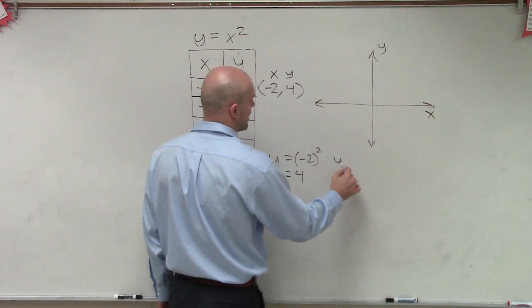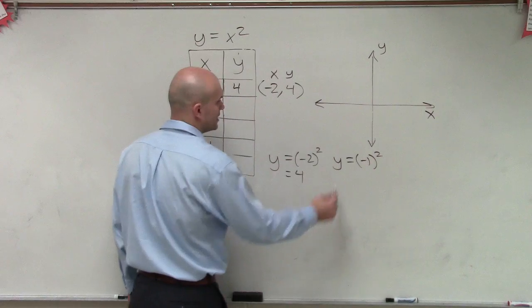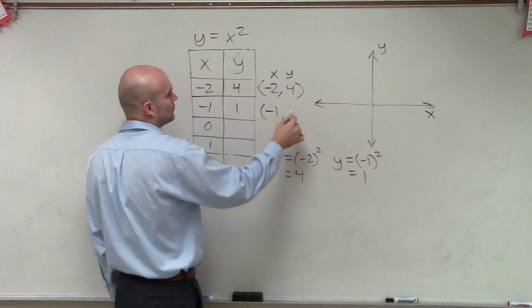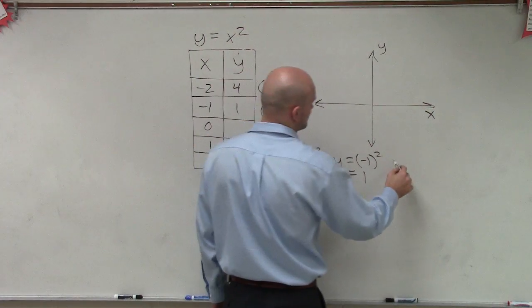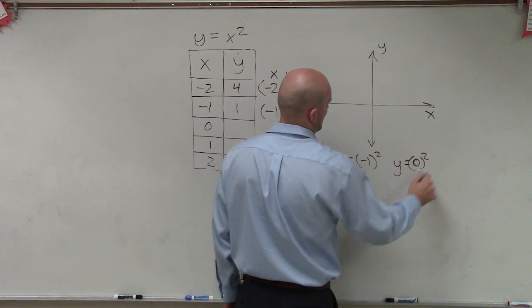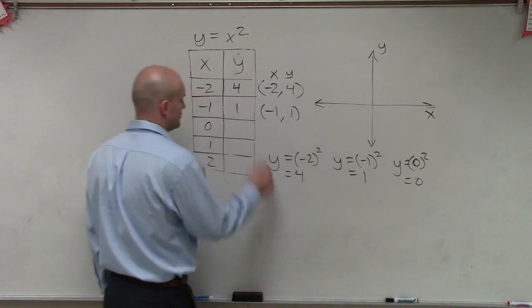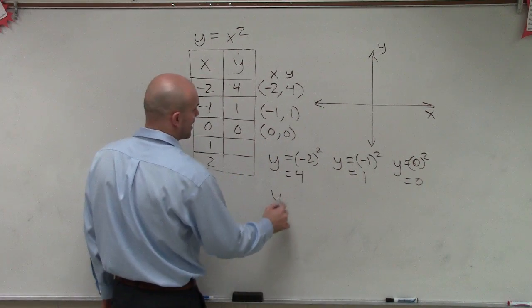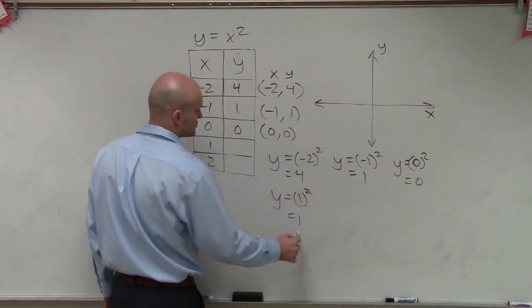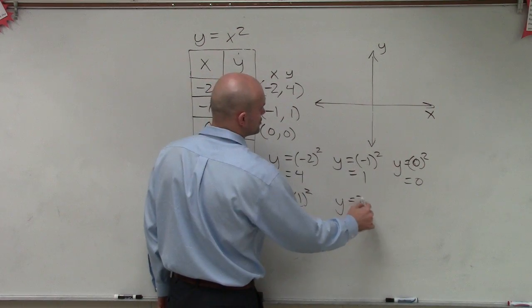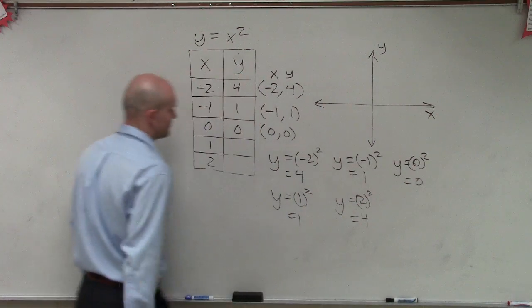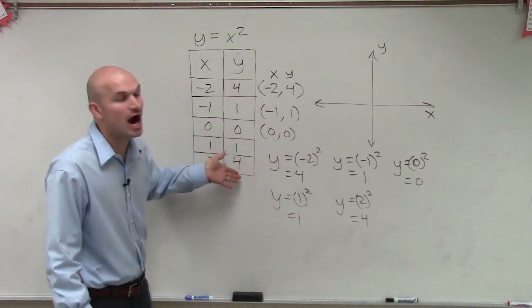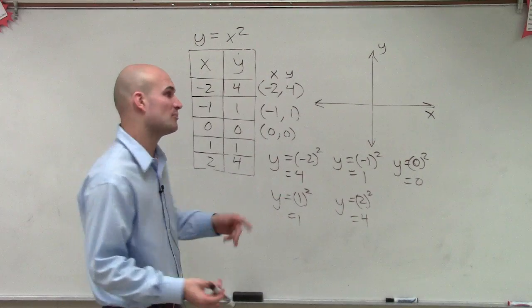Then I'll just continue on. Let's do for negative 1. So that's y equals negative 1 squared, which we know equals 1. That is also a coordinate point of negative 1 comma 1. We can do y equals 0, which we know is just going to equal 0. And then we can just continue on. We could say y equals 1 squared, which equals 1. And then y equals 2 squared, which equals 4. And what we notice is it doesn't really matter if it's a negative or a positive. We're still going to get our output value. And that's going to be the characteristic of a parabola.